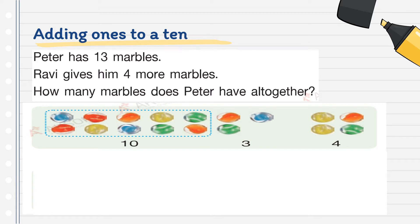Adding ones to a ten. We have a word problem, so let's read it. Peter has 13 marbles. Ravi gives him four more marbles. The question is: how many marbles does Peter have altogether?